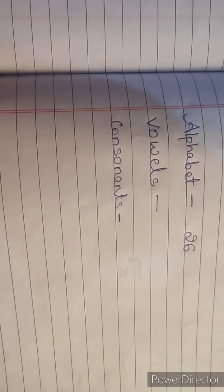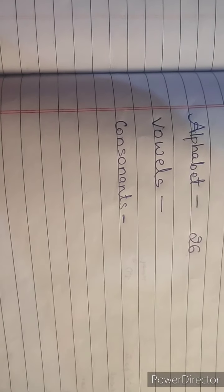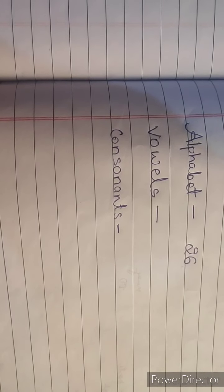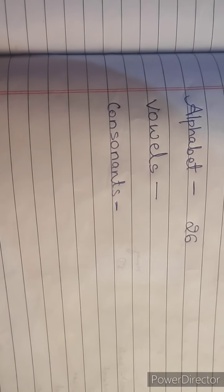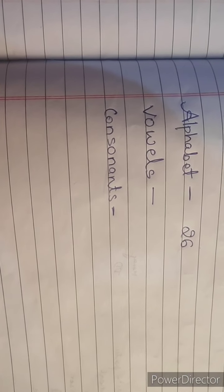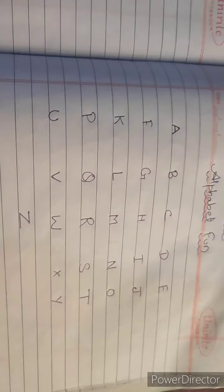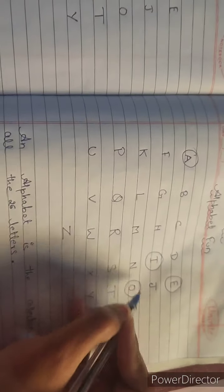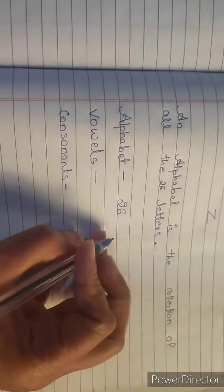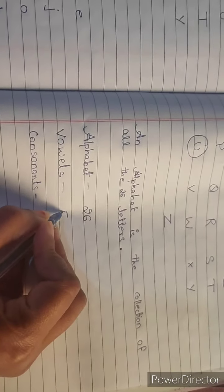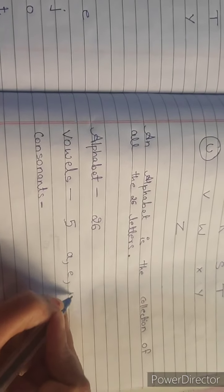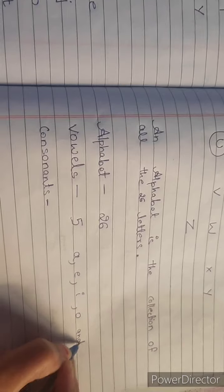Now come to the next topic, that is vowels. Its correct pronunciation is vowels, not vowels. There are total five vowels, that are A, E, I, O, and U. So there are total five vowels: A, E, I, O, and U.